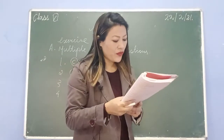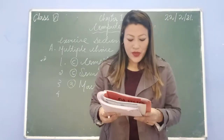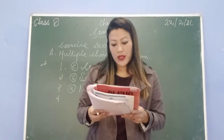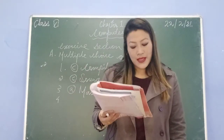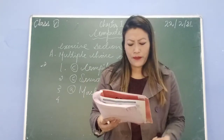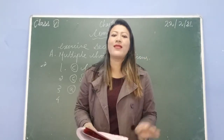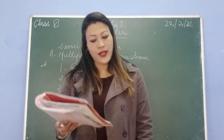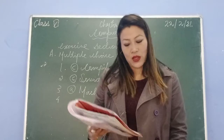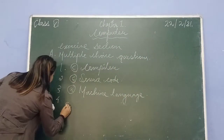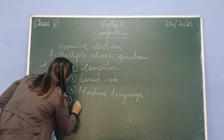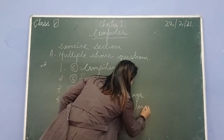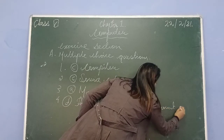For number 4: which of the following statements is not true about supercomputers? The options are: they can process trillions of instructions per second; they are used for complex data requiring high speeds of operation; they are used in research centers; and they are used for large amounts of transactions. The first three are true. The last statement is not true, so your answer will be D - they are used for large amounts of transactions.